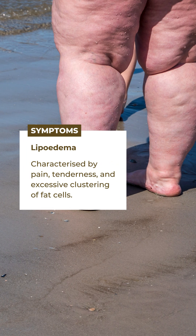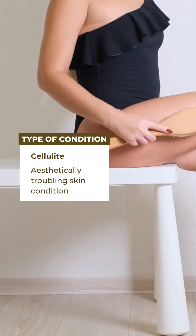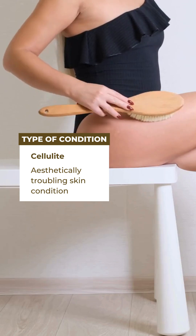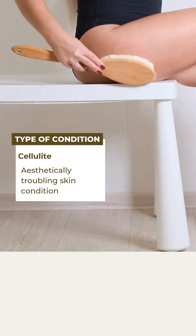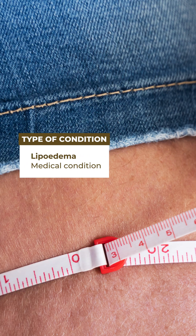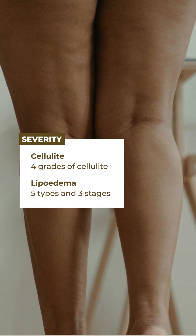Lipedema is characterized by pain, tenderness, and excessive clustering of fat cells. Cellulite is an aesthetically troubling skin condition, while lipedema is a medical condition. Cellulite has four grades, while there are five types and three stages of lipedema.